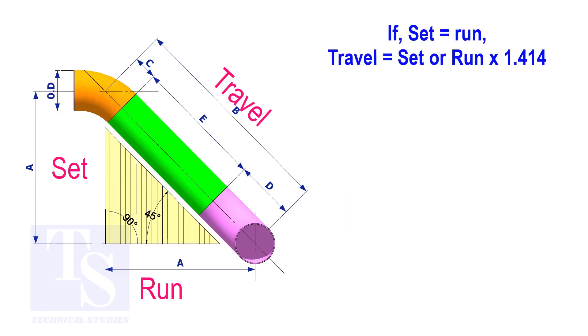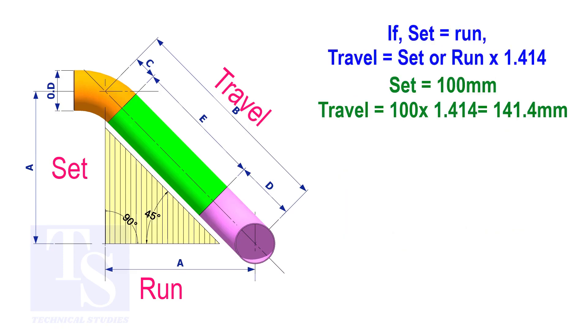Assume that the value of the set is 100. The value of the travel is 100 multiplied by 1.414, which equals 141.4.